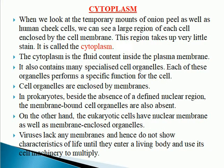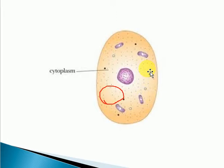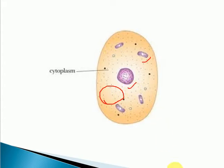Hello students, we will continue with chapter 5, the fundamental unit of life, and we will be starting with a new topic today: cytoplasm. What exactly is cytoplasm? In a cell, the ground material, the ground substance is called the cytoplasm, in which all the cell organelles are present, whether it is the nucleus, mitochondria, or ribosomes. These all cell organelles are present in a ground substance called the cytoplasm.